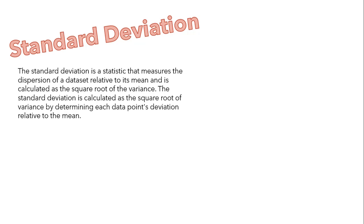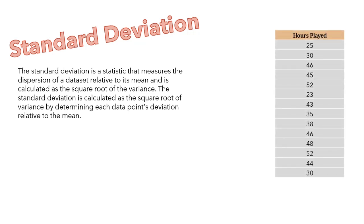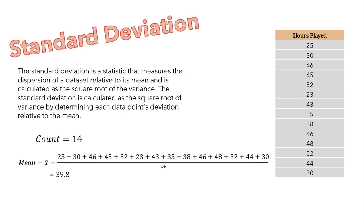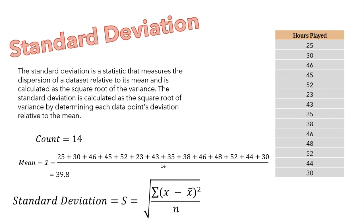Let's calculate the standard deviation for our target value. We have 14 observations, so n = 14. We calculate the mean as the sum of all observations divided by total number of observations, which is 39.8. The formula for standard deviation is the square of (observation minus mean) over total number of observations, calculated for each observation — written as summation of (x minus x_mean) squared over n. Substituting n = 14 and x_mean = 39.8, our standard deviation is calculated as 9.32.